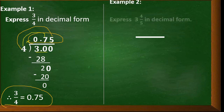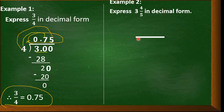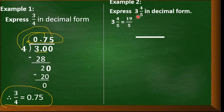Let's have another example: express 3 and 4-fifths in decimal form. Since 3 and 4-fifths is a mixed number, we have to change it to an improper fraction first. Multiply the denominator 5 by 3: 5 times 3 is 15, plus 4 is 19, and copy the denominator 5. So 3 and 4-fifths equals 19 over 5.